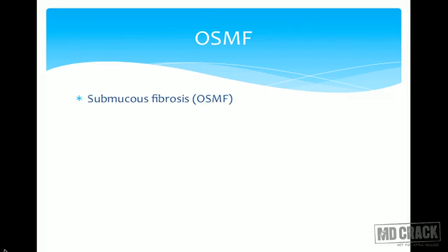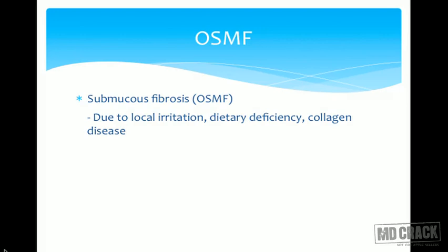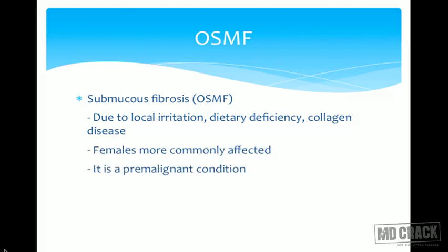Oral submucous fibrosis (OSMF) is due to local irritation, dietary deficiency, and collagen disorder. Females are commonly affected and it is a pre-malignant condition. In this case, trismus is seen — trismus means difficulty in opening the mouth.